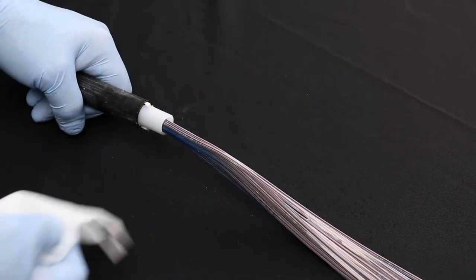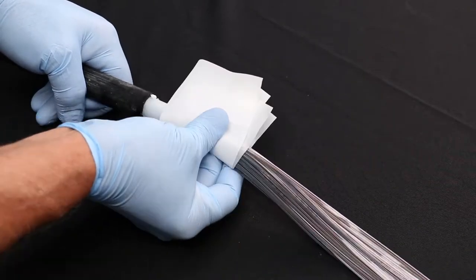Clean any blocking gel from the ribbons, and then break them into 12 fiber subunits where applicable.